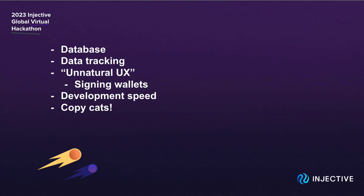Last but not least, another challenge in the Web3 world is copycats. Not saying Web2 doesn't have copycats, but in Web3 people can easily fork your project because your smart contract is open source. We have seen this before with Uniswap and Sushiswap — it's quite easy to fork another project's smart contract code if it's successful. So building a real product that people genuinely use is important.